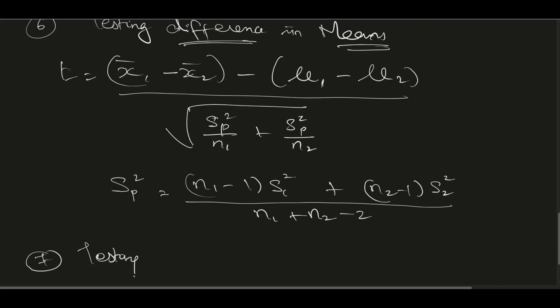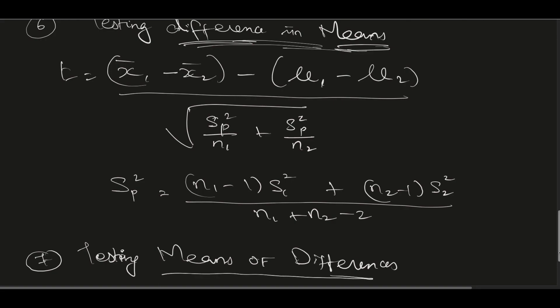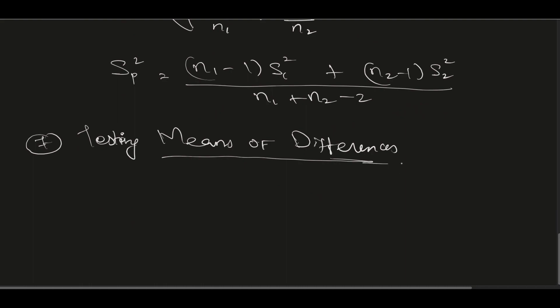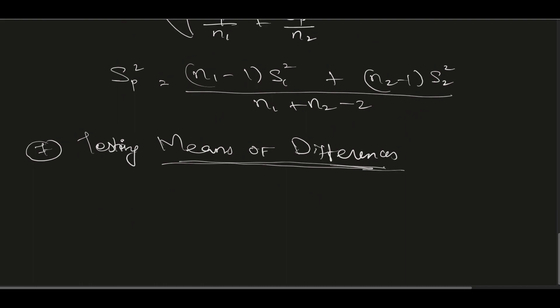The seventh scenario is testing the means of differences — note that this is different from testing the difference in means. This is about the means of the differences between observations, and it is also called the paired comparison test.